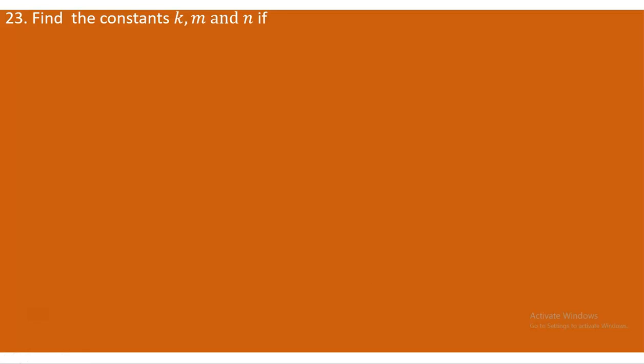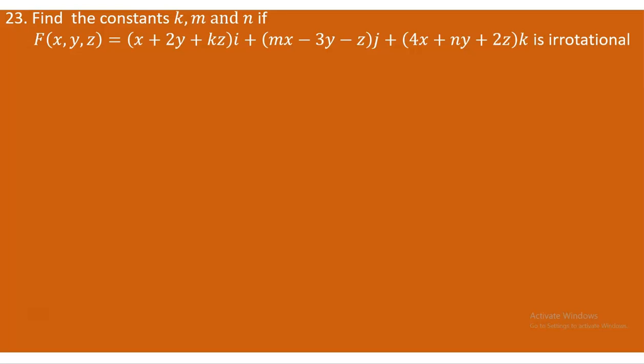The next question concerns the irrotational characteristic of a given vector field F with constants K, M, and N. If this vector field F is assumed to be irrotational — meaning no rotation at all — then the curl of F must equal zero. We need to find the values of K, M, and N such that the curl of F is the zero vector.